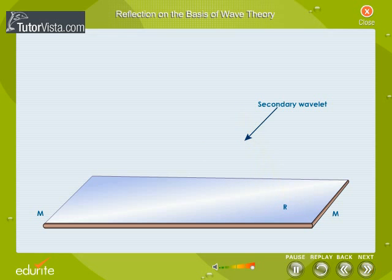The wavefront first strikes the reflecting surface MM at A and then at successive points towards R.